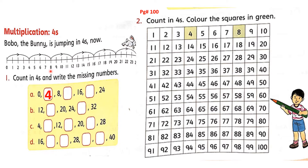Start jumping now from number 8. Skip next 3 numbers — 9, 10, 11. What is written at the 4th place? Yes, number 12. Right answer, 12 here. After 12, where will it go? Yes, next is number 16 — it is already written. Start jumping from number 16, count 4 more — 17, 18, 19, and 20. Right answer, 20 here.